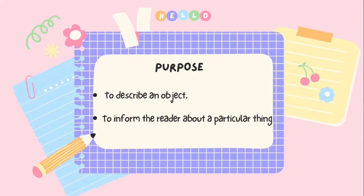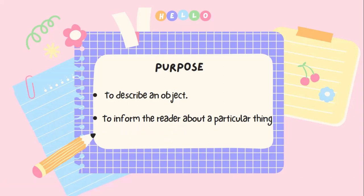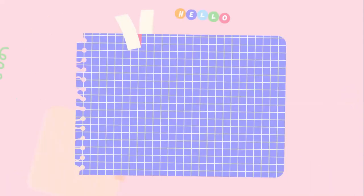Next, setelah definisi, di sini ada tujuan dari descriptive text. Tujuannya adalah: yang pertama, to describe an object; yang kedua, to inform the reader about a particular thing. Jadi kalau bahasa Indonesia, tujuan dari descriptive text adalah untuk mendeskripsikan sebuah objek — orang, binatang, tempat, ataupun benda — dan untuk memberikan informasi kepada si pembaca tentang bagian-bagian dari benda tersebut.